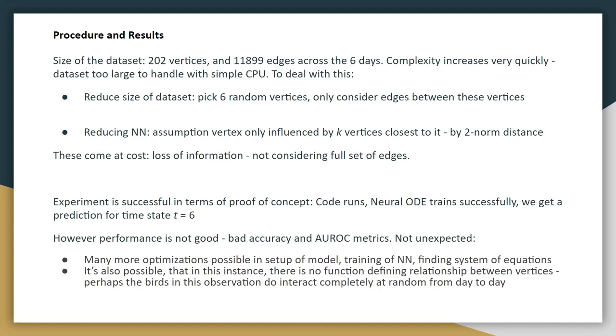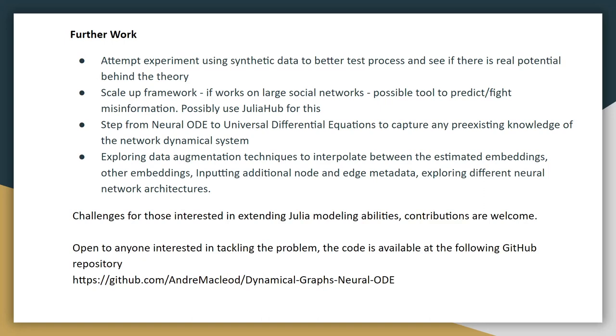But the experiment itself we consider successful in terms of proof of concept, as the code does run, the neural ODE does train successfully, and we get a prediction for that time state of t equals six. Now the performance itself is not good in terms of accuracy and AUROC performance metrics, but this is not unexpected, for the reasons that we've explained earlier, the loss of information, as well as many more optimizations being possible in terms of setup of the model, neural network training, the SINDy step of finding the actual functions themselves in that system. And it's also possible in this instance, there's actually no function defining the relationship between the vertices. It's simply possible that the birds in this observation do interact at random. There's nothing there to actually model.